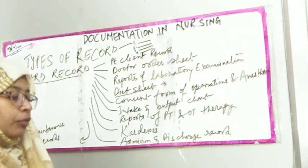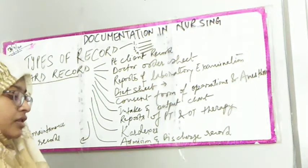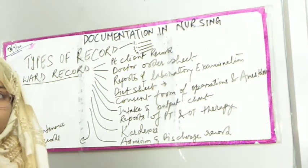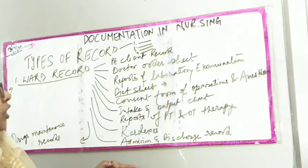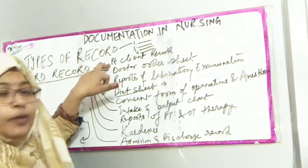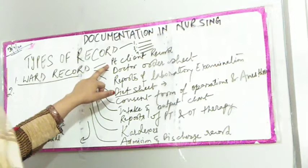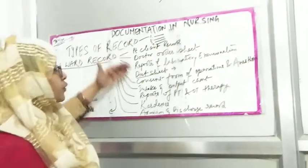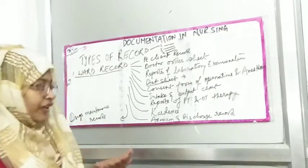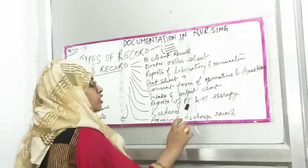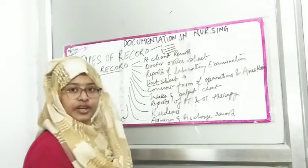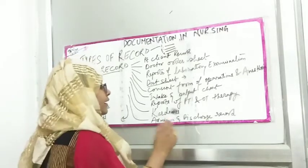Basically, when you go to the hospital as a nurse, the patient has a small file in the ward. All these sheets are required in that file. From the first day the patient arrives — through emergency or OPD — all their records, including the client report and consent forms, are kept in this ward file.